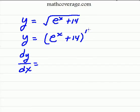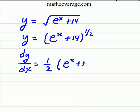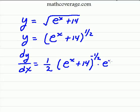We raise it to the one-half power because it's the square root. So we take the one-half, bring it out front, rewriting everything in parentheses, and then subtracting one from the exponent, and that leaves us with negative one-half. Now remember, we need to take the derivative of the inside, and the derivative of e to the x is just e to the x, and the derivative of 14 is zero.